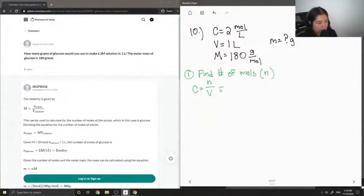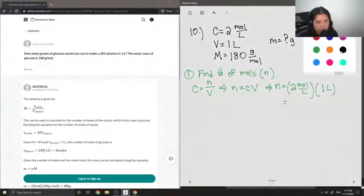So I am going to rearrange this equation so that we're solving for number of moles. So it's just going to be concentration times volume. So we know the concentration is 2 moles per liter. We know the volume is 1 liter. So if we multiply the two together, you should see the liters cancelling out. And we're left with a value in moles. And all it is is just 2 moles.